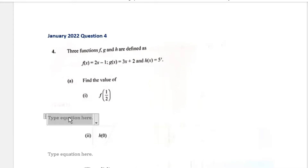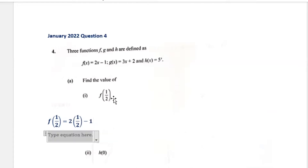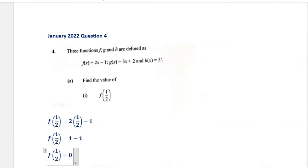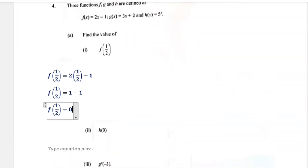Part a says find the value of f of a half. What this means is that wherever in the f(x) function you see x, you replace it with one half. So f(1/2) = 2 times one half, which is 1, minus 1. Therefore f(1/2) is equal to zero. This is saying that when x equals one half, our y value is zero.